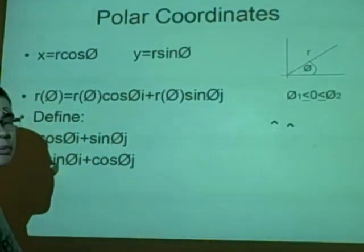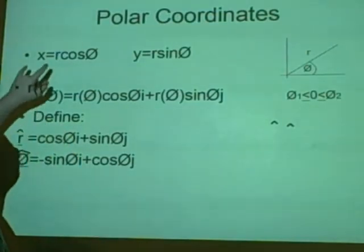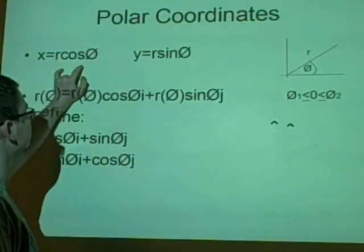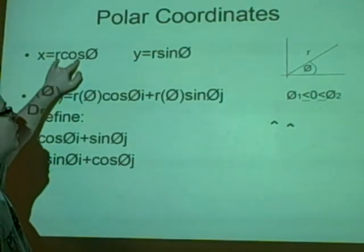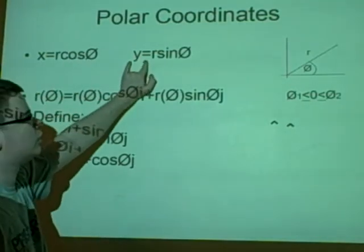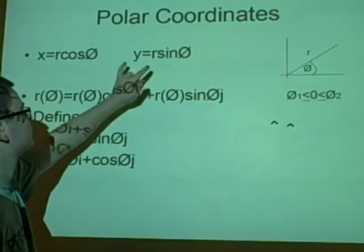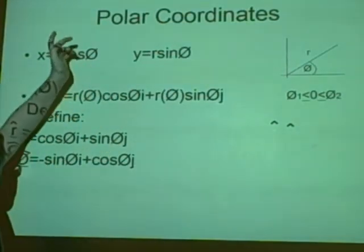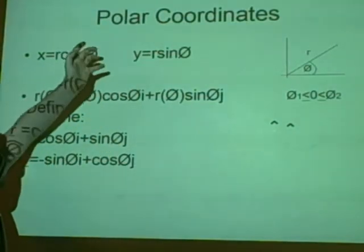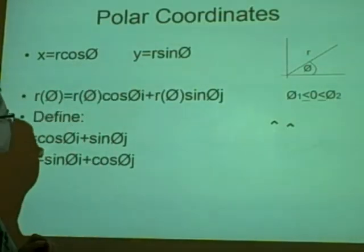Now on to polar coordinates. As you should remember, we have x equals r cosine theta and y equals r sine theta. A good way to remember is x is a cross and cos sounds like cross, so if you have trouble remembering.